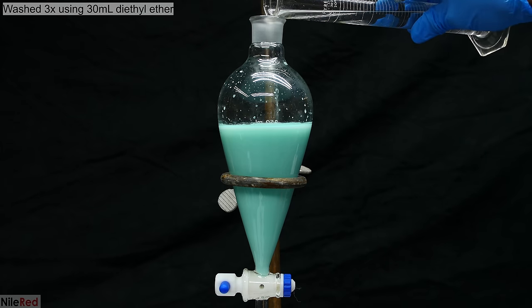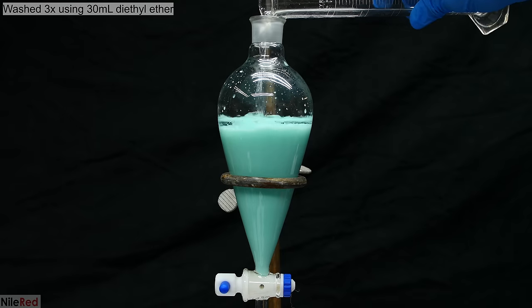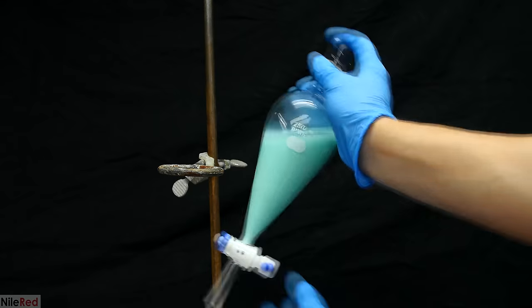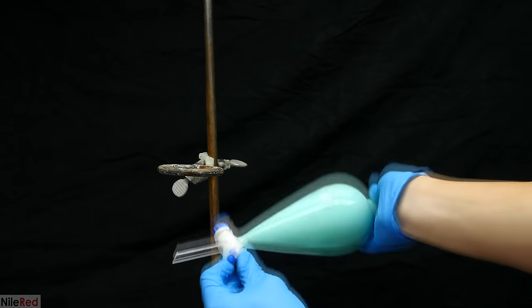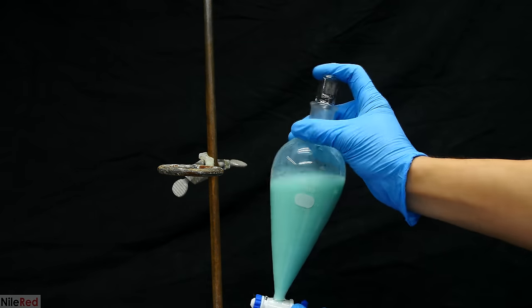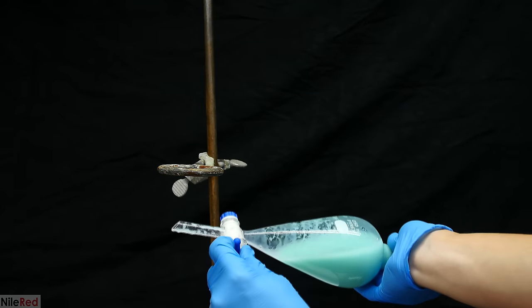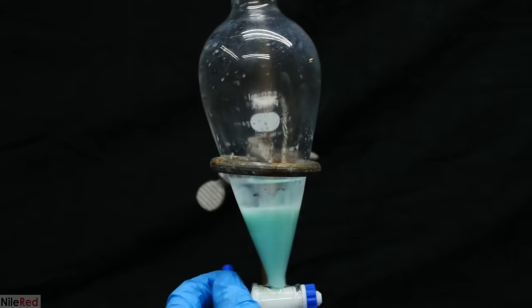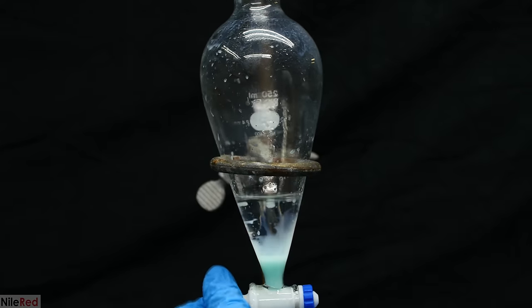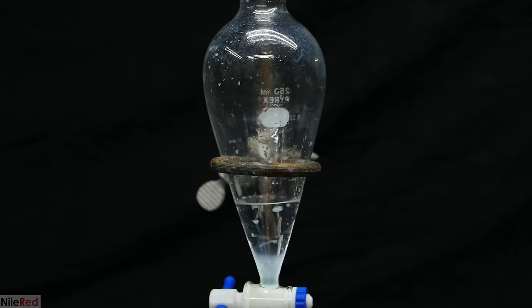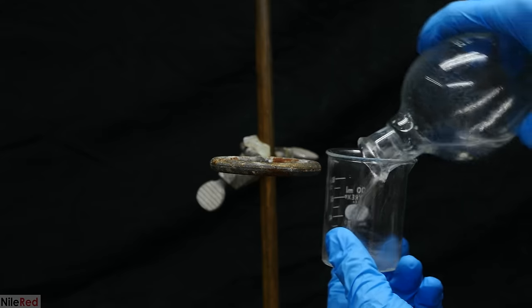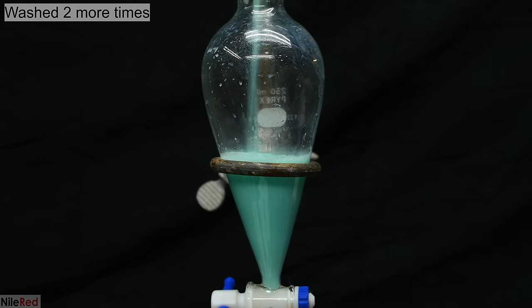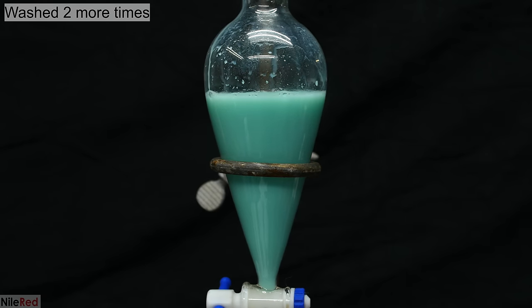The cadaverine solution was extracted three times using 30 milliliters of diethyl ether each time. The typical procedure is that we add the extraction solvent, we cap, shake, and vent the separatory funnel, and then we place it back on the stand for the layers to separate. Once the layers have separated, the lower aqueous layer is drained off, and we collect the upper ether layer in a beaker. This process is repeated two more times for a total of three washings.